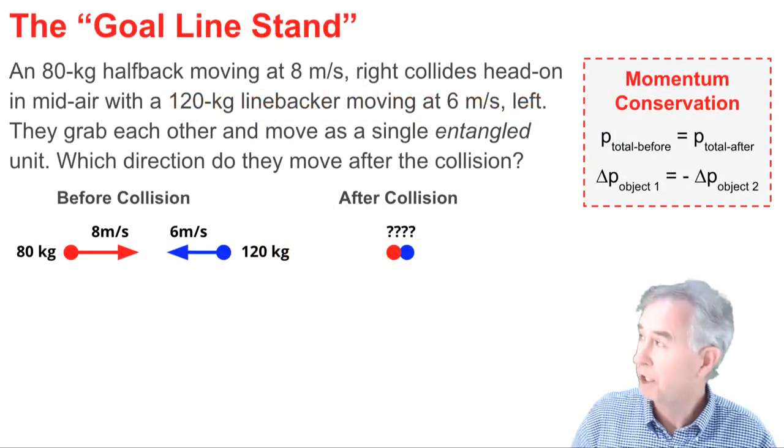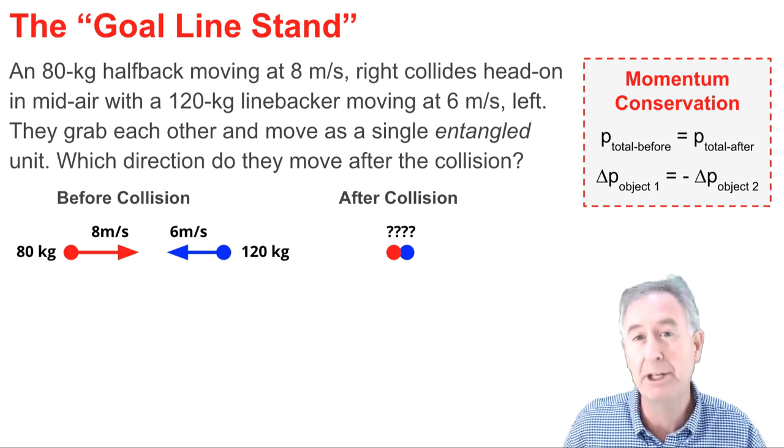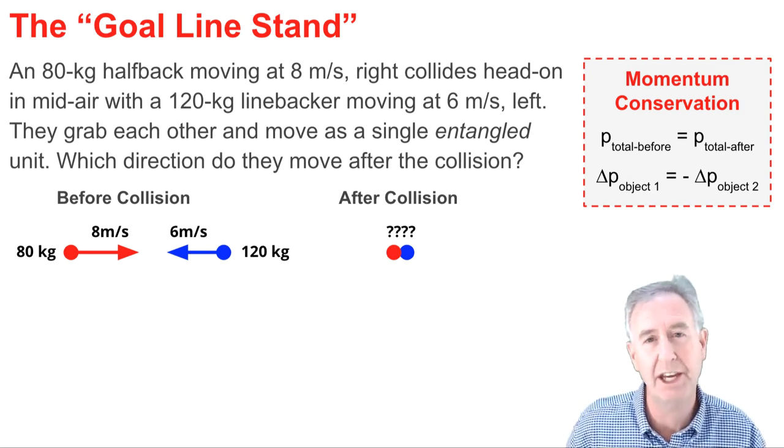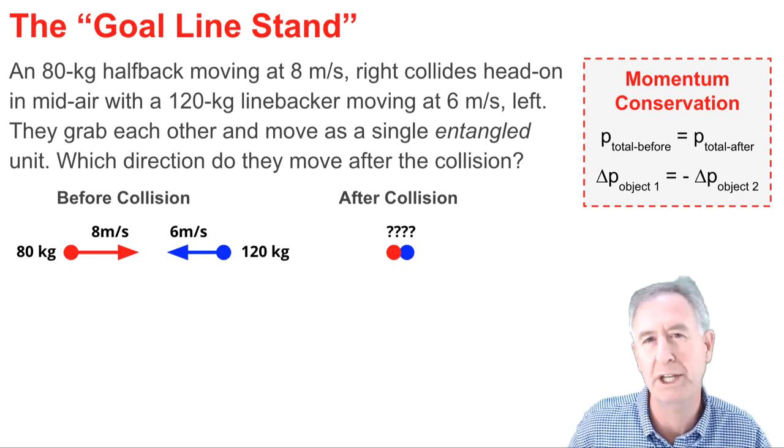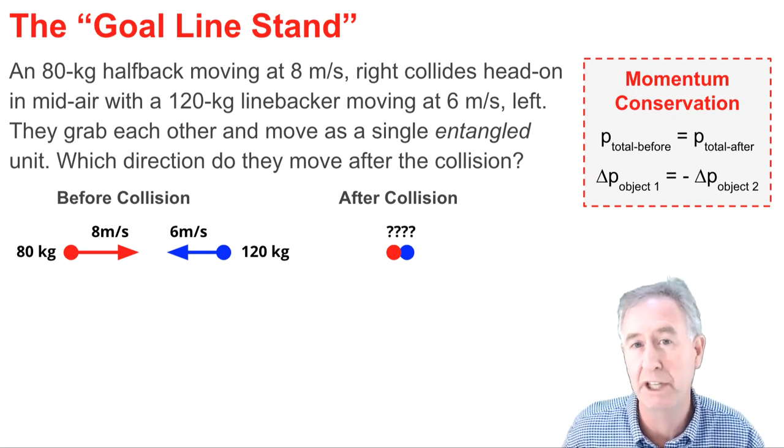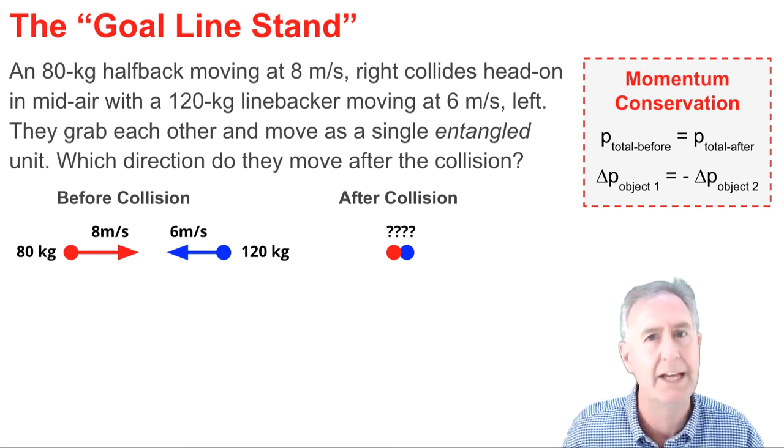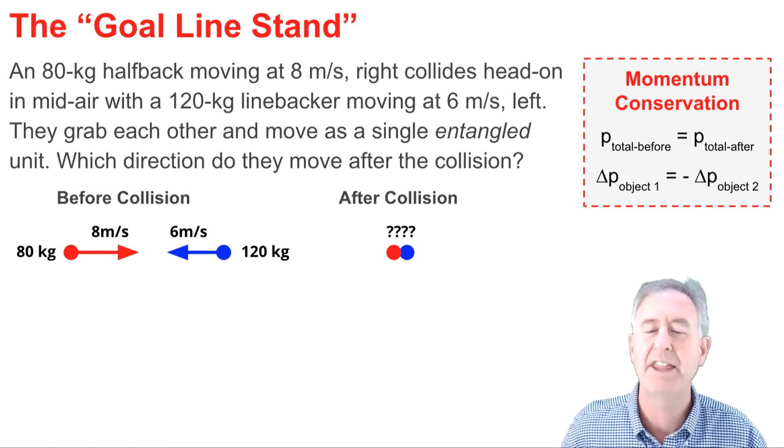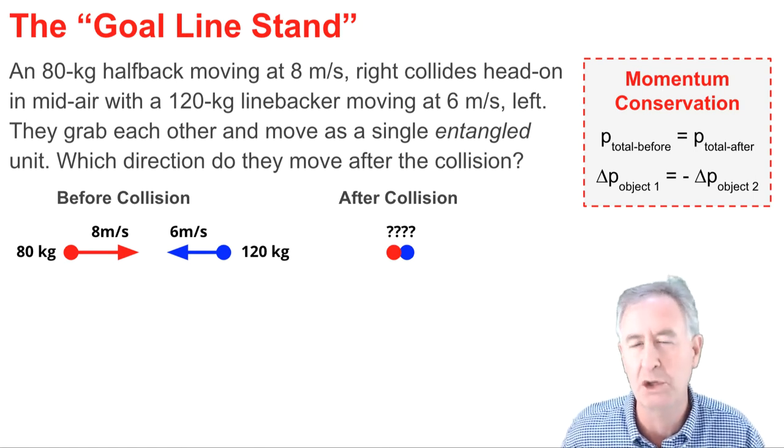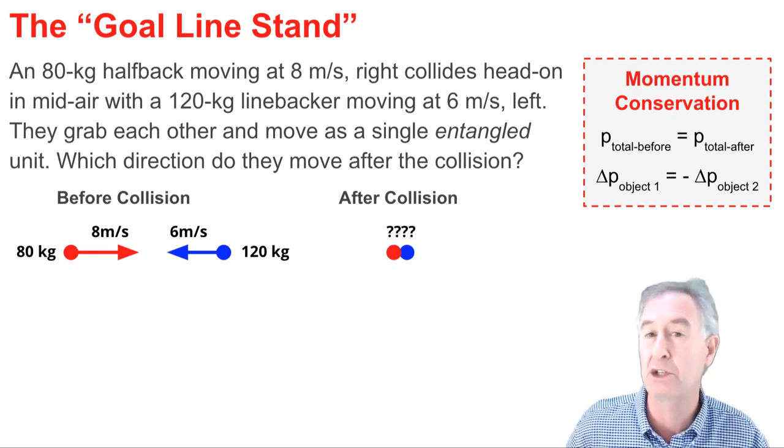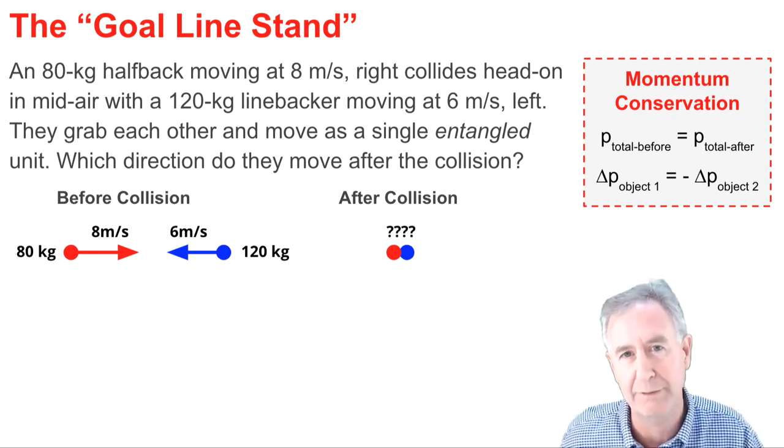In this problem, an 80 kilogram halfback moving to the right at 8 meters per second collides head-on and in mid-air with a 120 kilogram linebacker that's moving left at 6 meters per second, just above the goal line. They grab each other and move as a single entangled unit, which is an oddball way of saying there was a tackle. In which direction did the two players move after the collision?